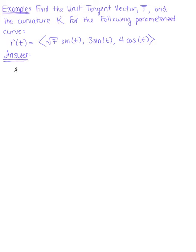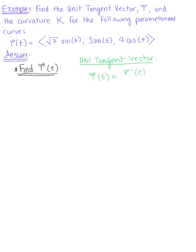The first thing we want to do is find the unit tangent vector. Let's start by recalling the formula we need. The unit tangent vector is a vector of length 1 pointing in the direction of the tangent vector, defined as the first derivative of vector r divided by the magnitude of the tangent vector.